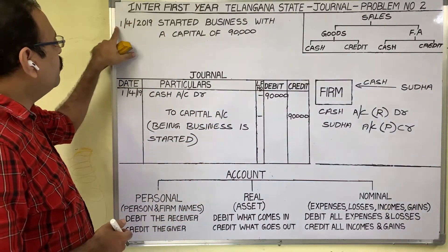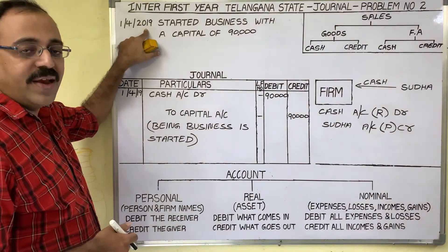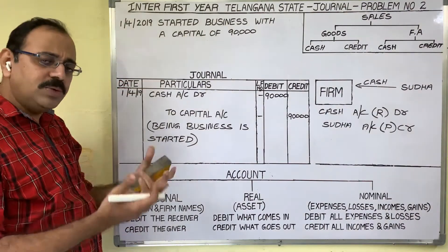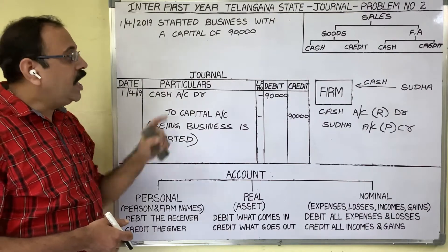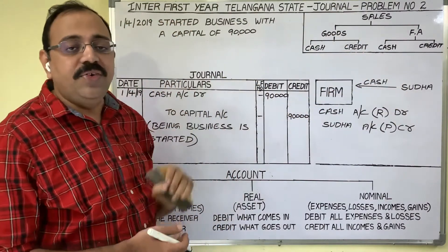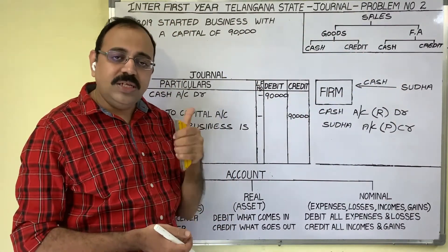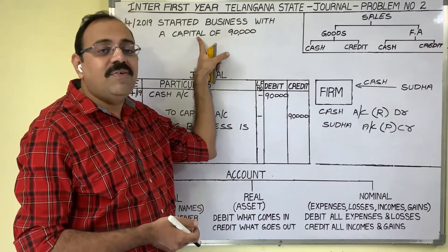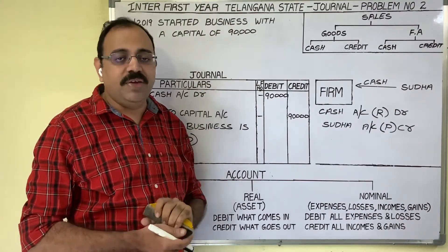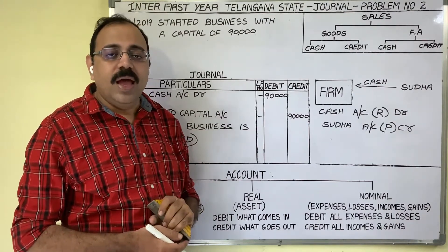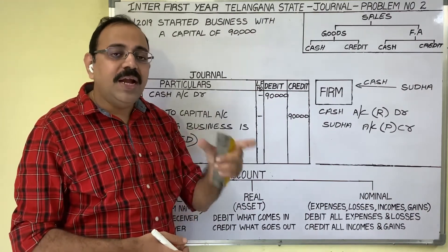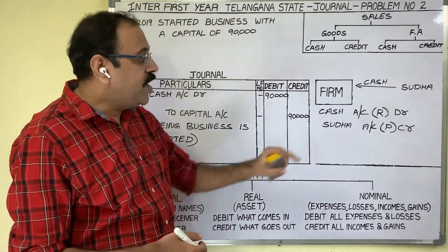The first transaction is on 1st April 2019: started business with a capital of 90,000 rupees. The business owner, Sudha, is the owner of this firm. While writing a journal entry there are some steps. First step: in every financial business transaction there will be minimum two accounts — these two accounts we should identify. Second step is grouping, and the third step is applying the double entry principles.